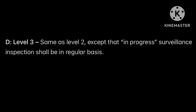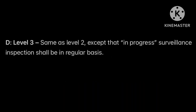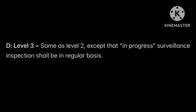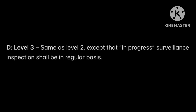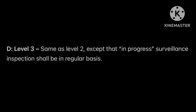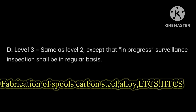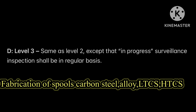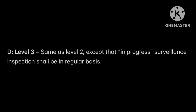Level 3 inspection includes the same elements as Level 2 — pre-inspection meetings, unspecified in-progress surveillance visits, witness and hold points, and final inspection. The key difference is that inspections are conducted on a regular basis: daily, weekly, or bi-weekly.